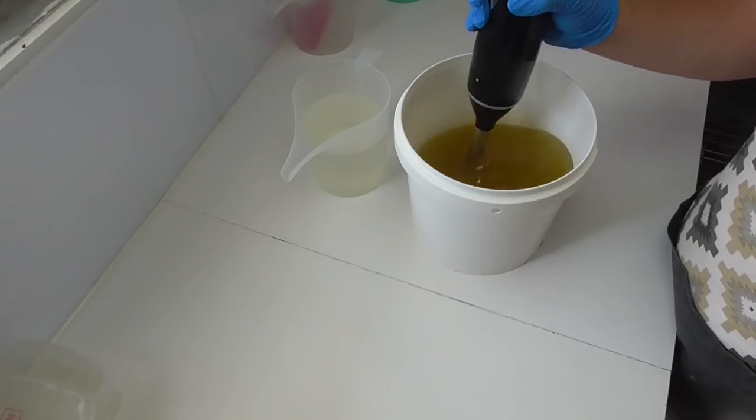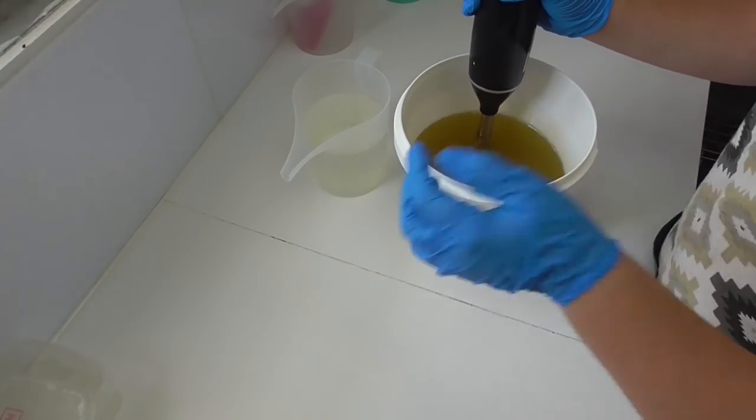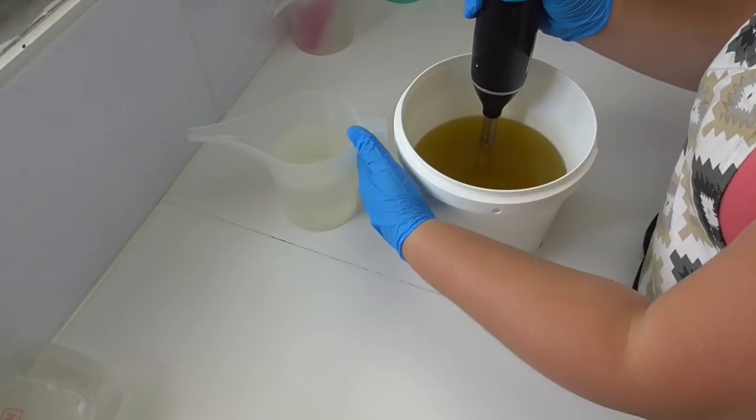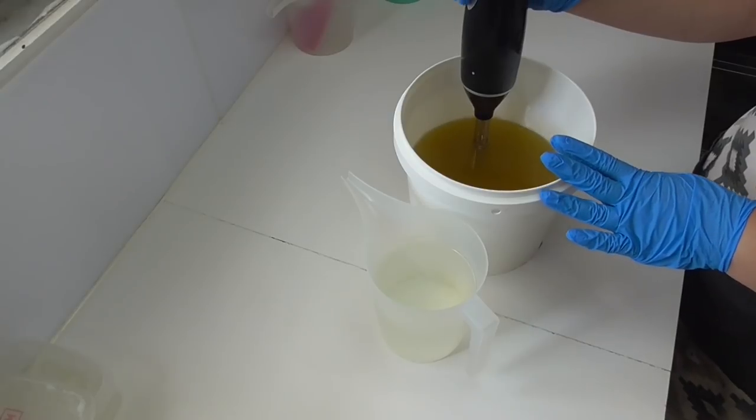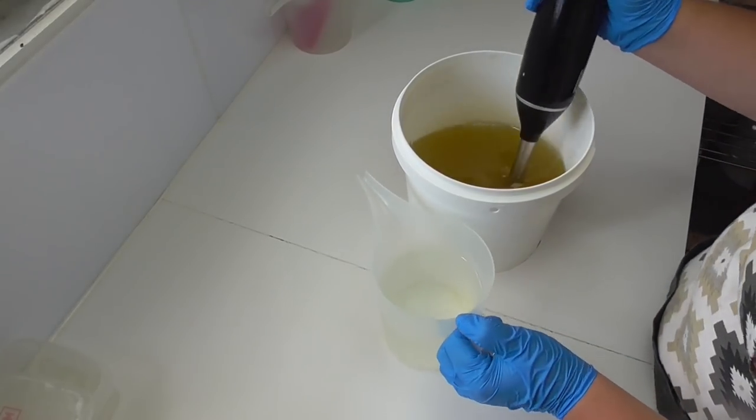The first thing I'm going to do is pour my lye water solution down my stick blender just to stop any splash back. And then I'm going to split it out for the colours and then add in the fragrance which I'll stir in by hand.